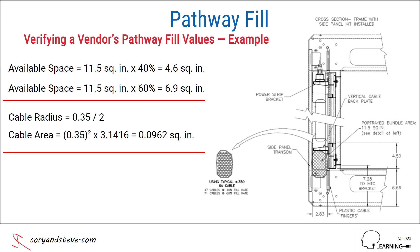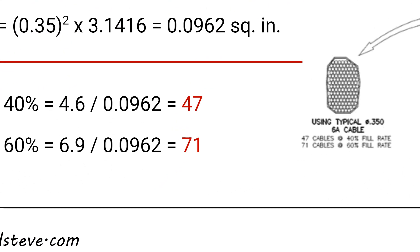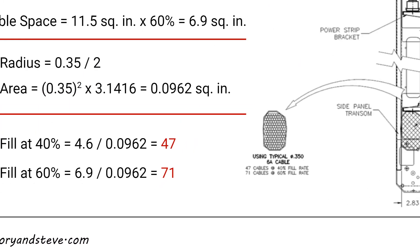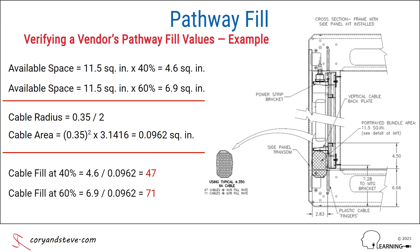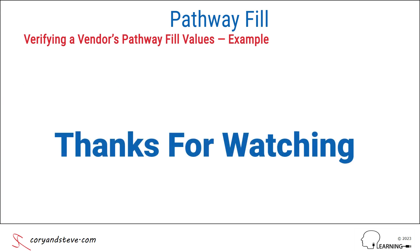And the last step is to divide the available spaces by the cable area, which gives us the exact values of 47 and 71 claimed by the vendor. That's it — we're done. Thanks for watching.